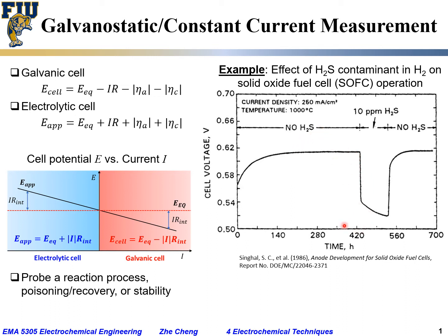Then at around 420 hours, 10 ppm (parts per million by volume) of hydrogen sulfide was introduced into the hydrogen fuel stream. At the same current density, the cell voltage dropped instantaneously — within a few hours — by a significant amount, from roughly 0.62 V to roughly 0.54 V.